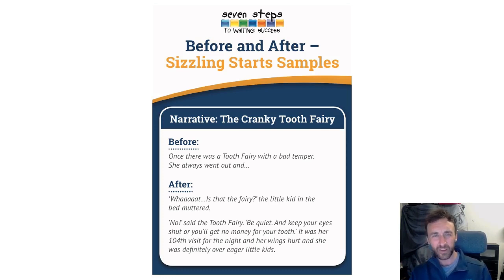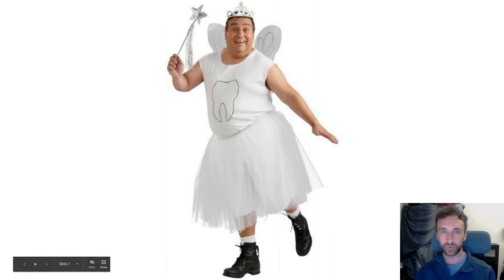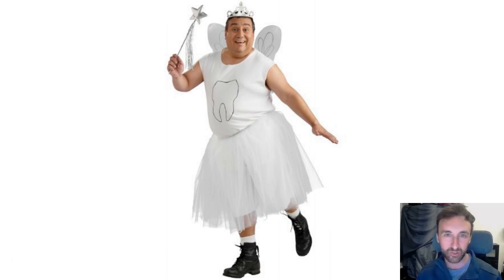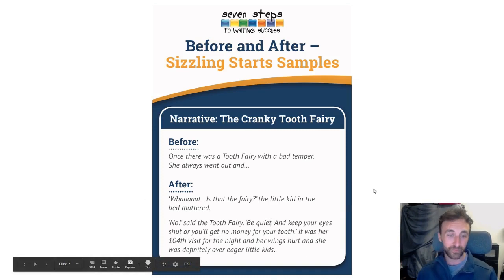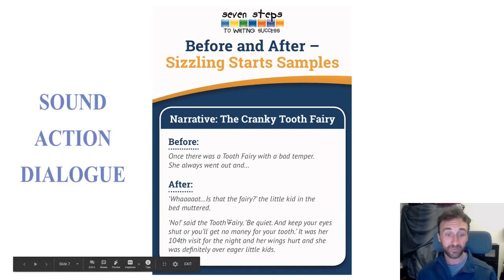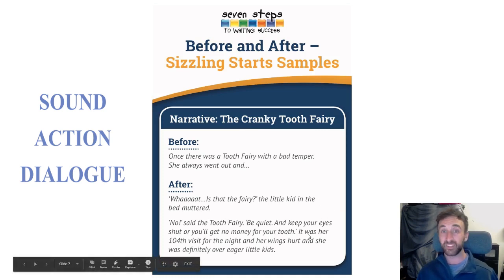"What? Is that the fairy?" the little kid in the bed muttered. "No," said the tooth fairy. "Be quiet and keep your eyes shut or you'll get no money for your tooth." It was her 104th visit for the night and her wings hurt and she was definitely over eager little kids. You can see straight away how this better, up-leveled version is using some great sound, action and dialogue. We can look at the sound with the "what" and the "muttered" — lots of ways for sound to be integrated into the writing.